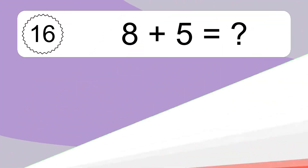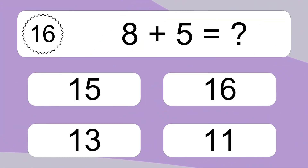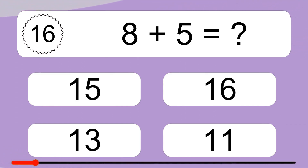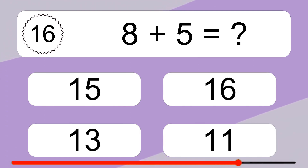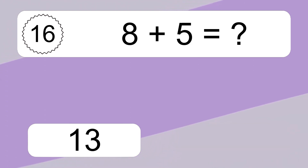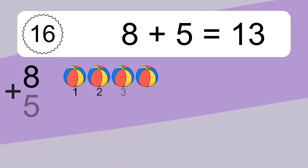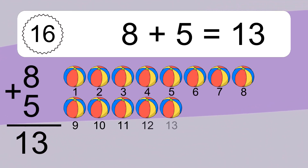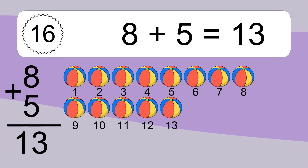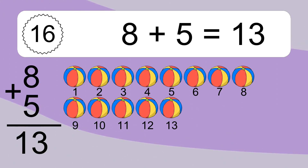8 plus 5 equals what? 8 plus 5 equals 13. Let's count it: 1, 2, 3, 4, 5, 6, 7, 8, 9, 10, 11, 12, 13.